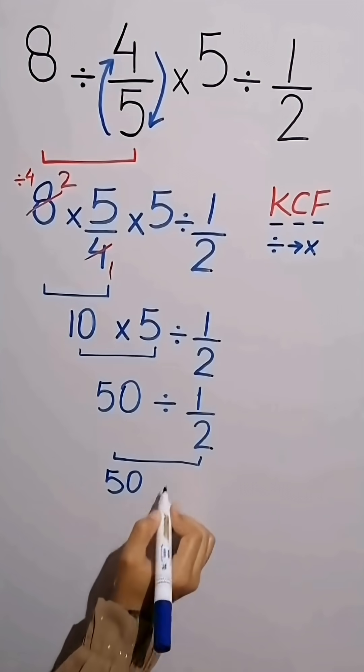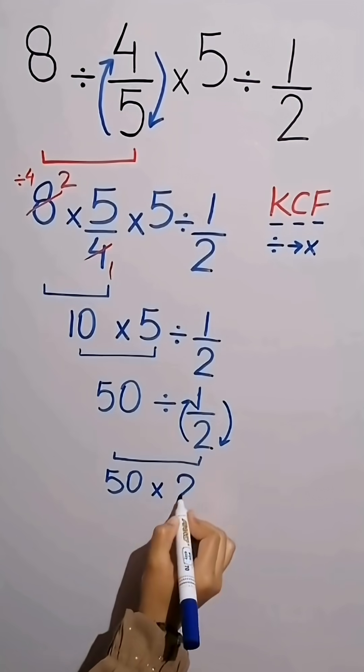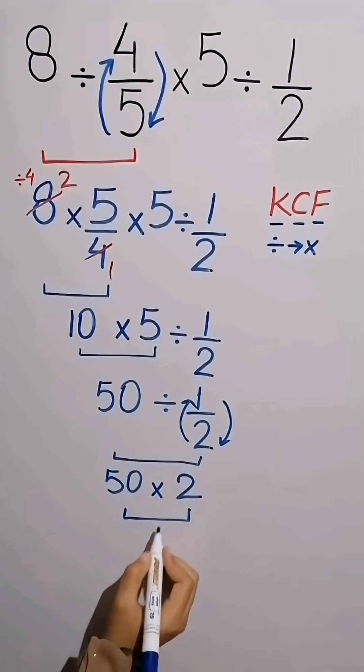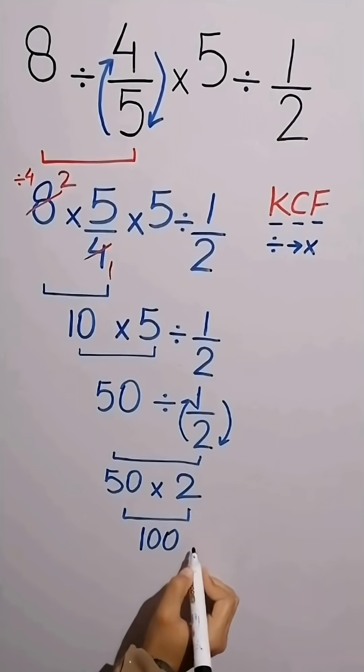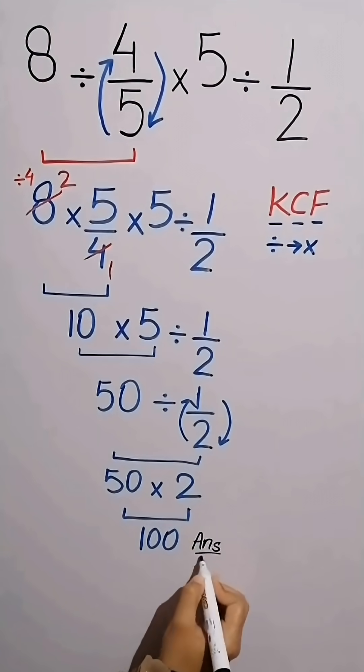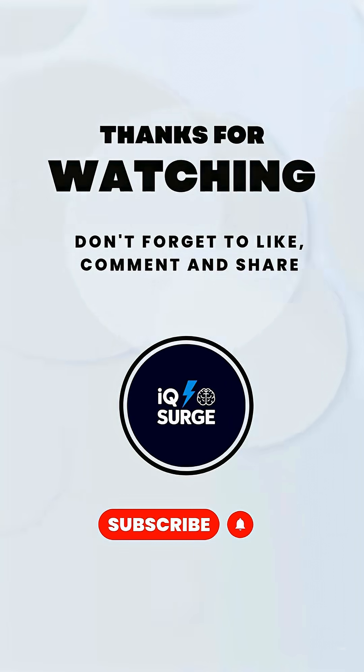50 times, and 1 over 2 becomes 2. Finally 50 times 2 equals 100. And this is the final answer to this expression. To see more math videos subscribe to the channel.